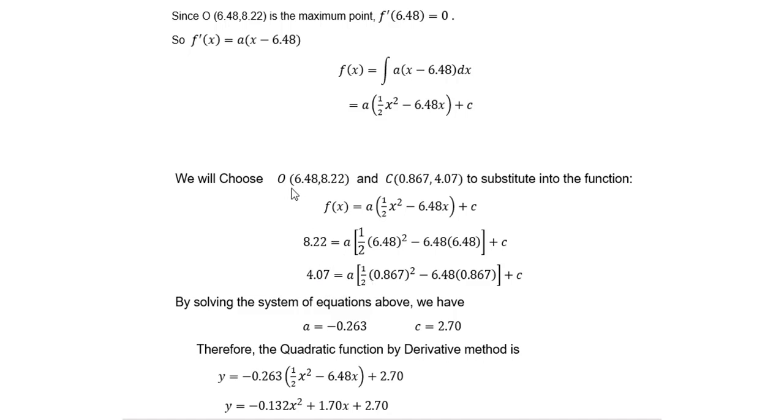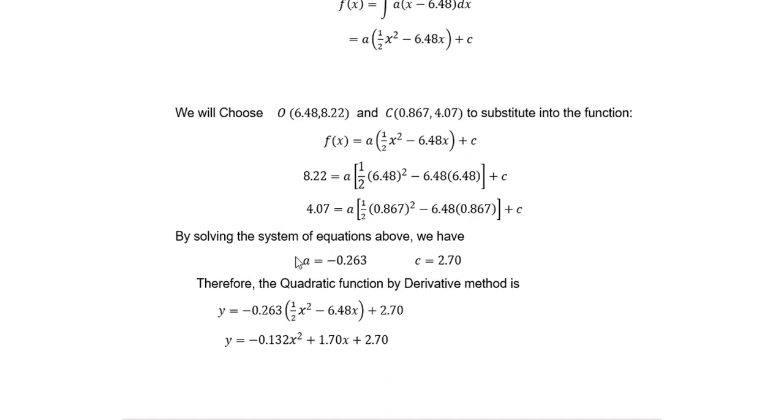We know this is the maximum point, and this is the ending point. By solving the system of equations above, we get a = -0.263, c = 2.70.